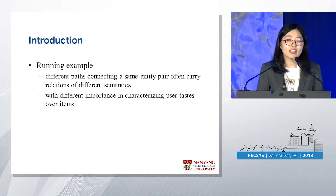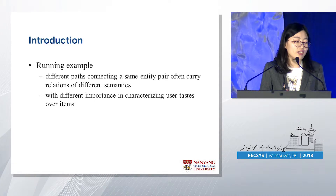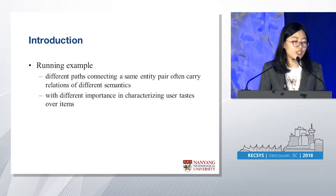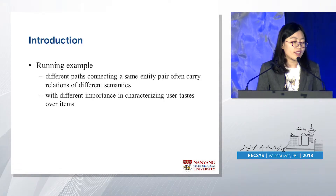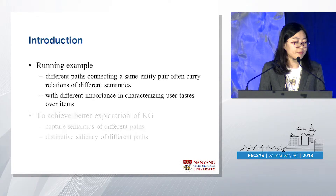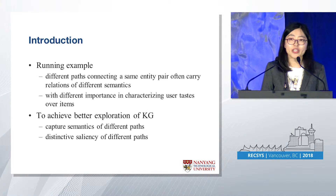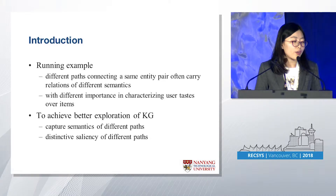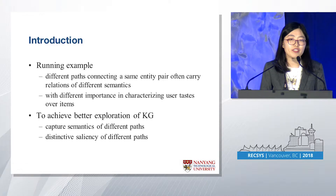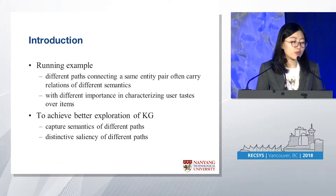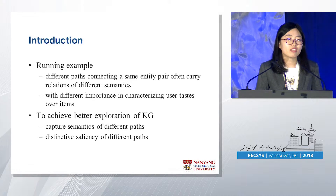From this running example, it highlights that different paths connecting the same user and movie pair carry relations of different semantics. Also, different paths will have different importance in characterizing the user's taste towards items. To achieve better exploration of the knowledge graph, we should not only capture the semantics of different paths, but also distinguish the saliency of different paths on users' preference towards items.